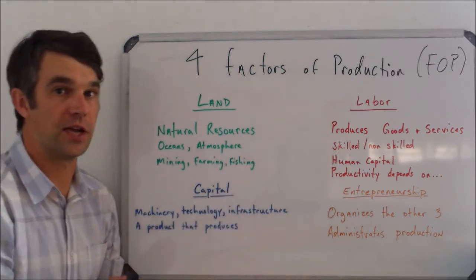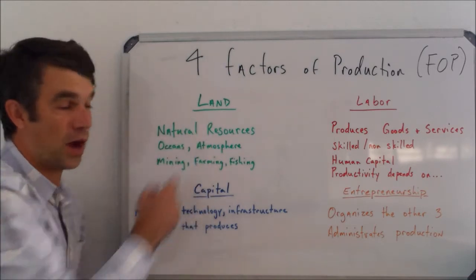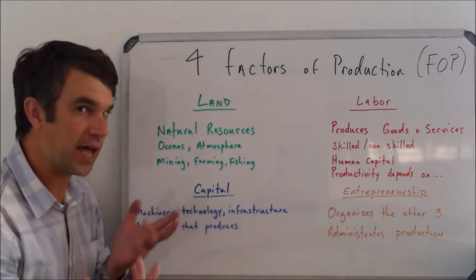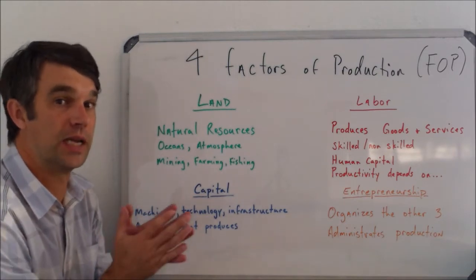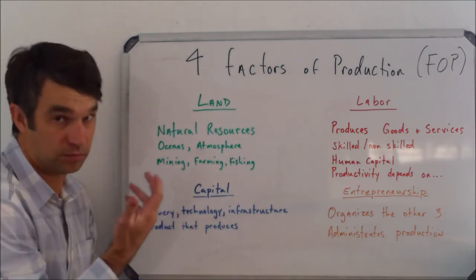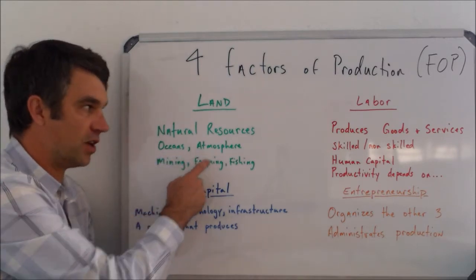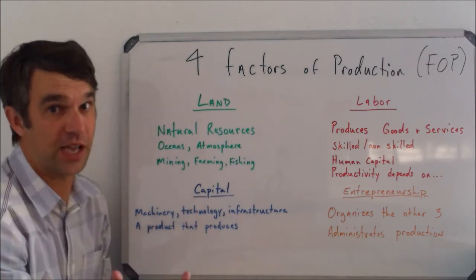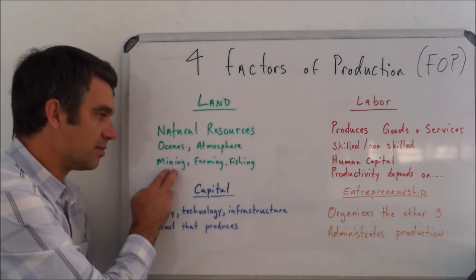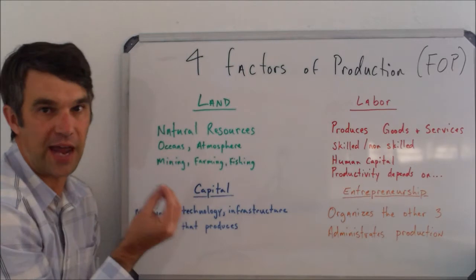Let's go over each one quickly, just to understand what each one is. You'll find in economics that we use words a bit fluidly. You probably came into class thinking land is that dirt stuff outside. Well, it's that too, but in economics we actually mean it to mean any natural resource — anything that is the land or comes from the land. We also include the oceans and other bodies of water, the atmosphere, basically anything on Earth, and outside of Earth if we start mining Pluto or something. Anything that is mined, farmed, or fished — we would say that is land.